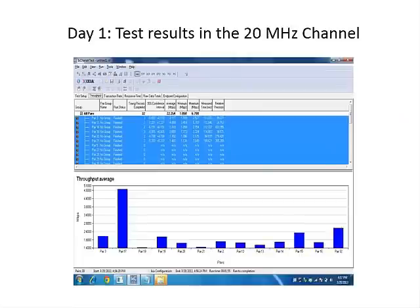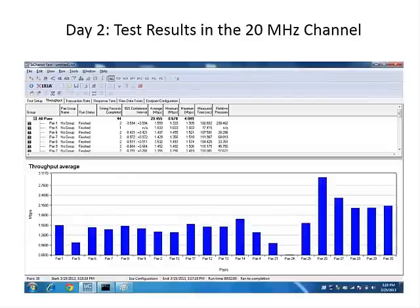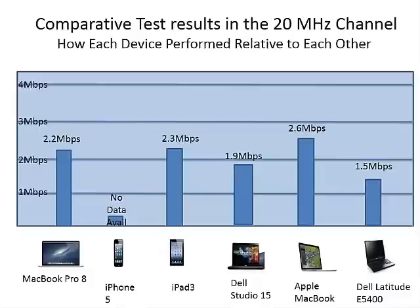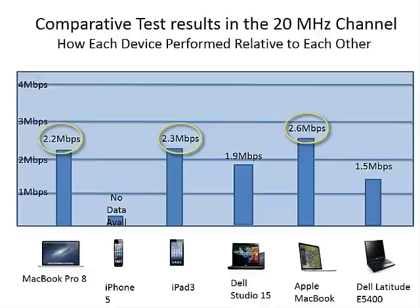Here are the Day 1 test results in the 20 MHz channel, and here are the Day 2 test results. In the comparative results for the 20 MHz channel, the Apple MacBook responded with the highest average throughput of 2.6 Mbps. The iPad 3 was close behind with 2.3 Mbps, as was the MacBook Pro 8 with 2.2 Mbps. The iPhone 5 was unresponsive in this test, leaving the Dell E5400 with the lowest average throughput value of 1.5 Mbps.